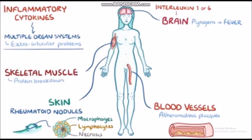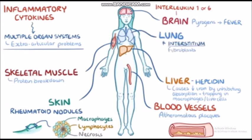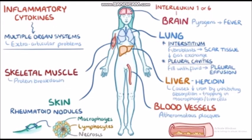In response to inflammatory cytokines, the liver also starts producing high amounts of hepcidin, a protein that decreases serum iron levels by inhibiting its absorption by the gut and trapping it in macrophages or liver cells. Meanwhile, within the lung interstitium, fibroblasts get activated and proliferate, causing fibrotic or scar tissue that makes it harder for alveolar gas exchange. Also, the pleural cavities surrounding the lungs can get inflamed and fill up with fluid, known as pleural effusion, which can sometimes interfere with lung expansion.